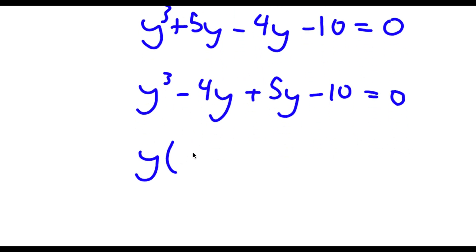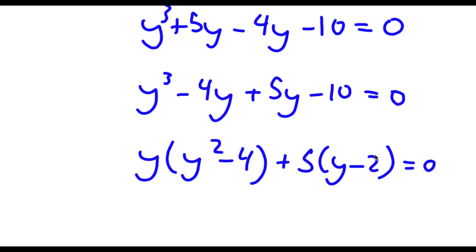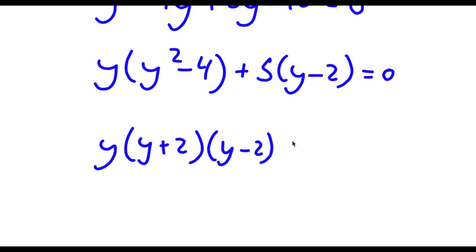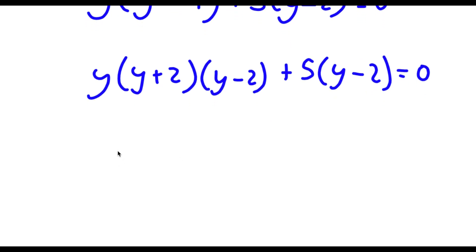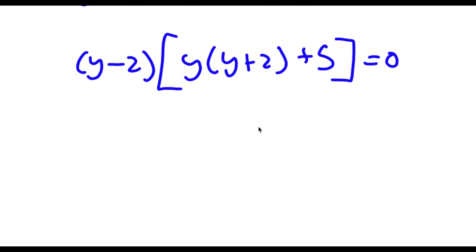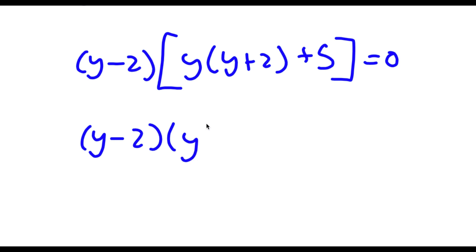If I factor out y from y cubed minus 4y I get y times y squared minus 4. Then if I factor out 5 from 5y minus 10 I get 5 times y minus 2, equals 0. Now y squared minus 4 is the same thing as y plus 2 times y minus 2. So I have y times y plus 2 times y minus 2 plus 5 times y minus 2 equals 0. Factoring out y minus 2, I get y minus 2 times y squared plus 2y plus 5 equals 0.